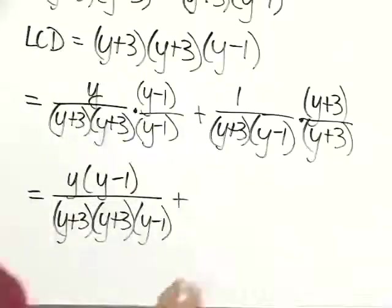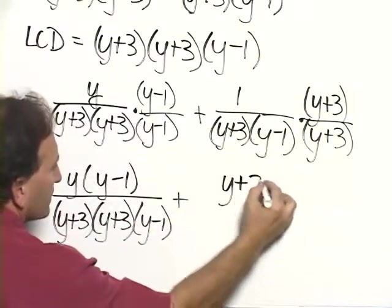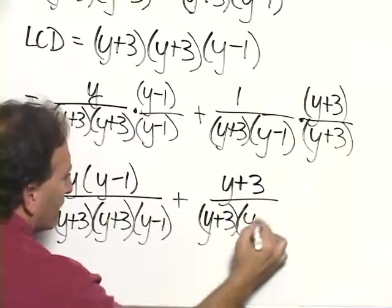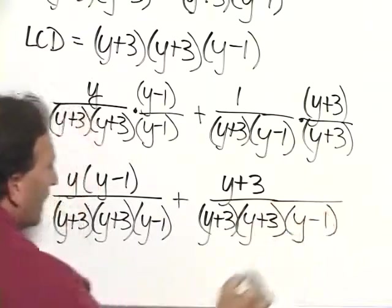plus 1 times the y plus 3 is just y plus 3. And that's over y plus 3 times y plus 3 times y minus 1.